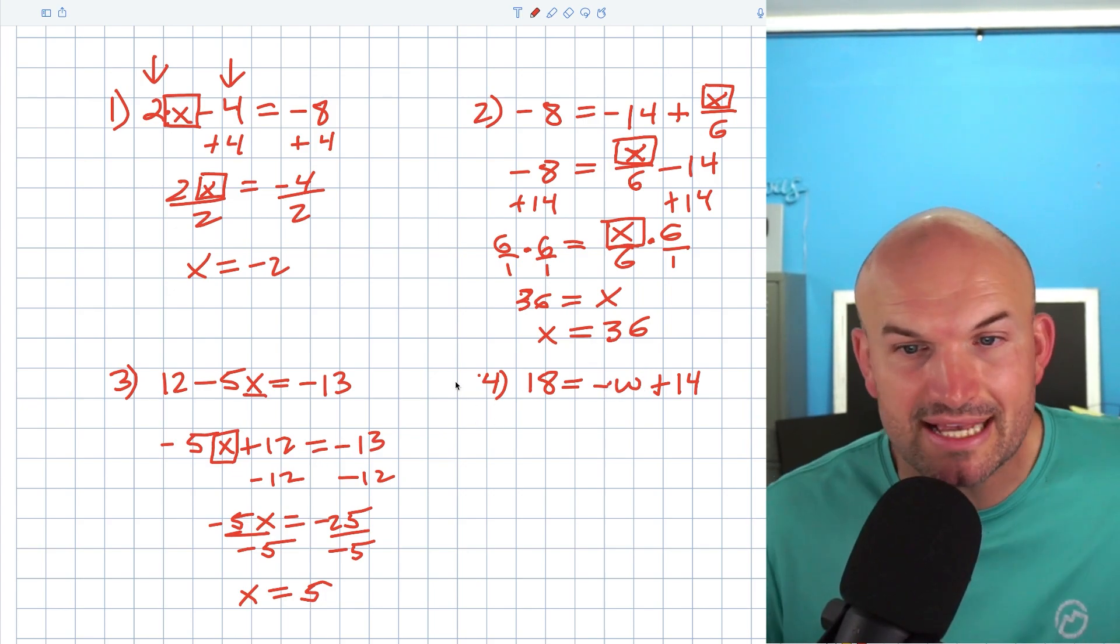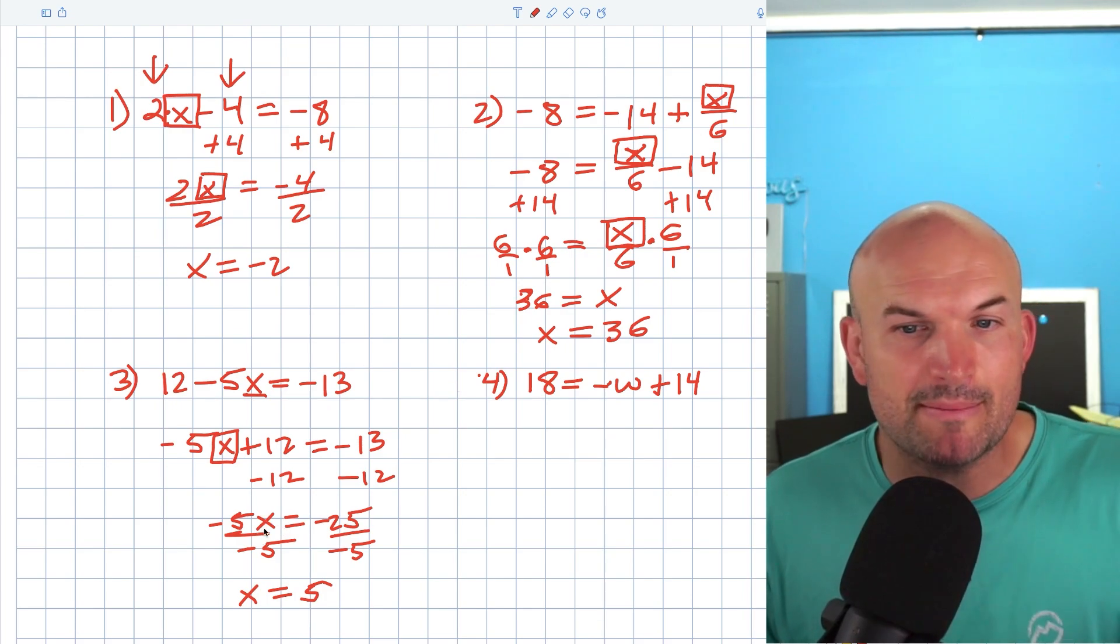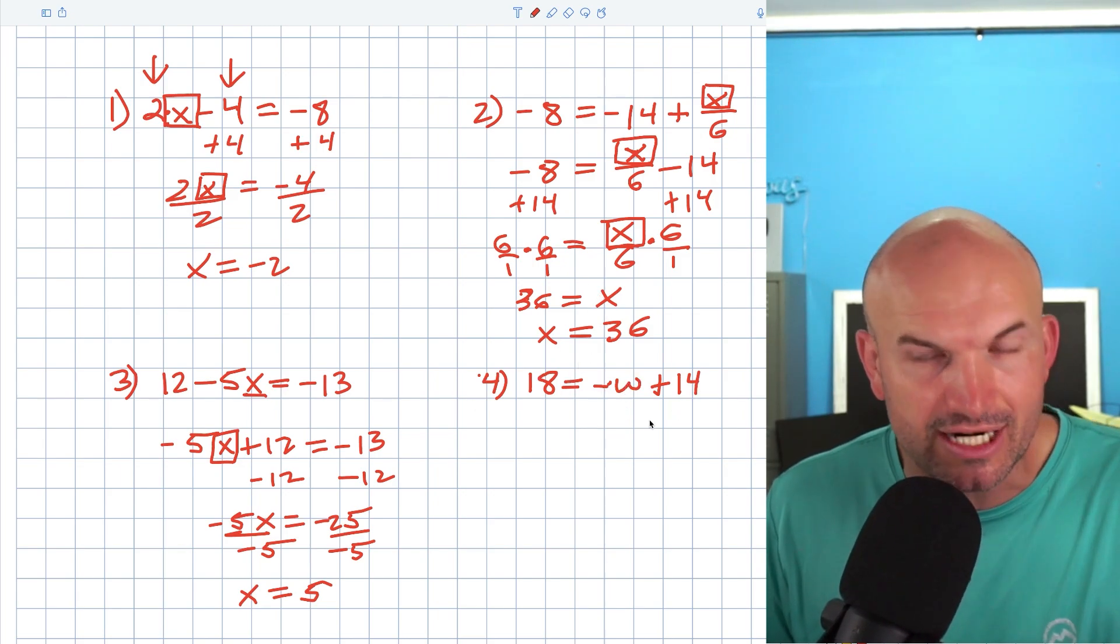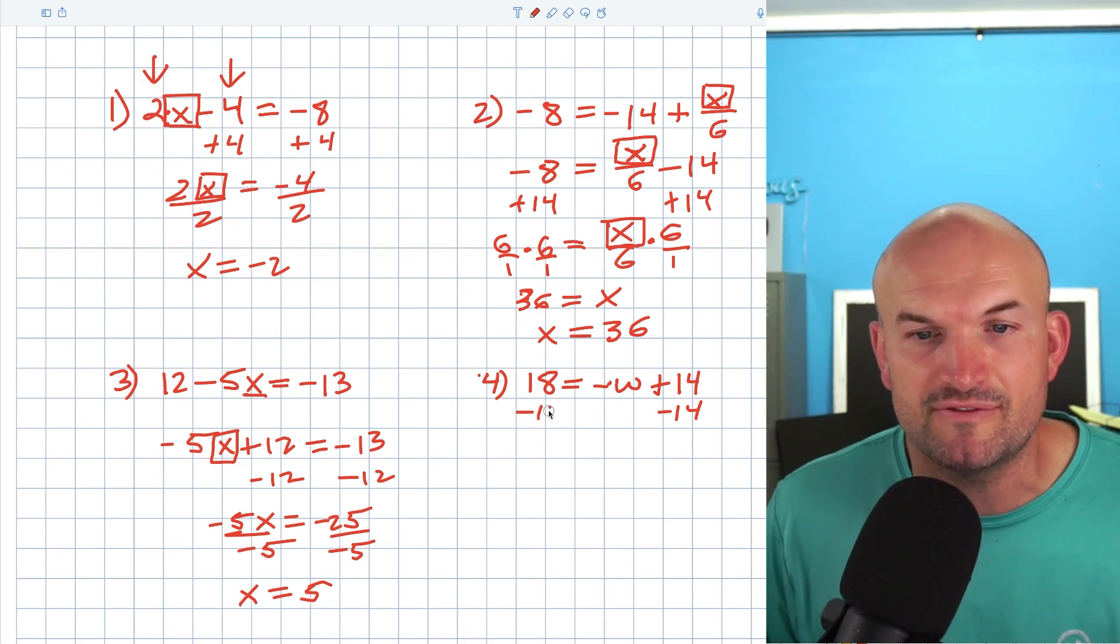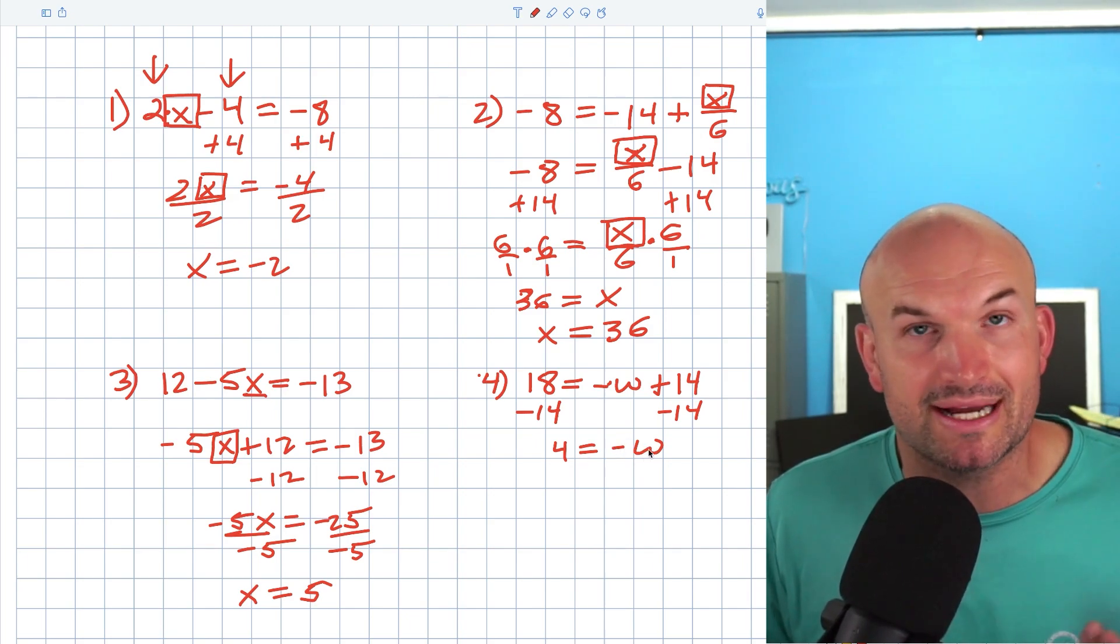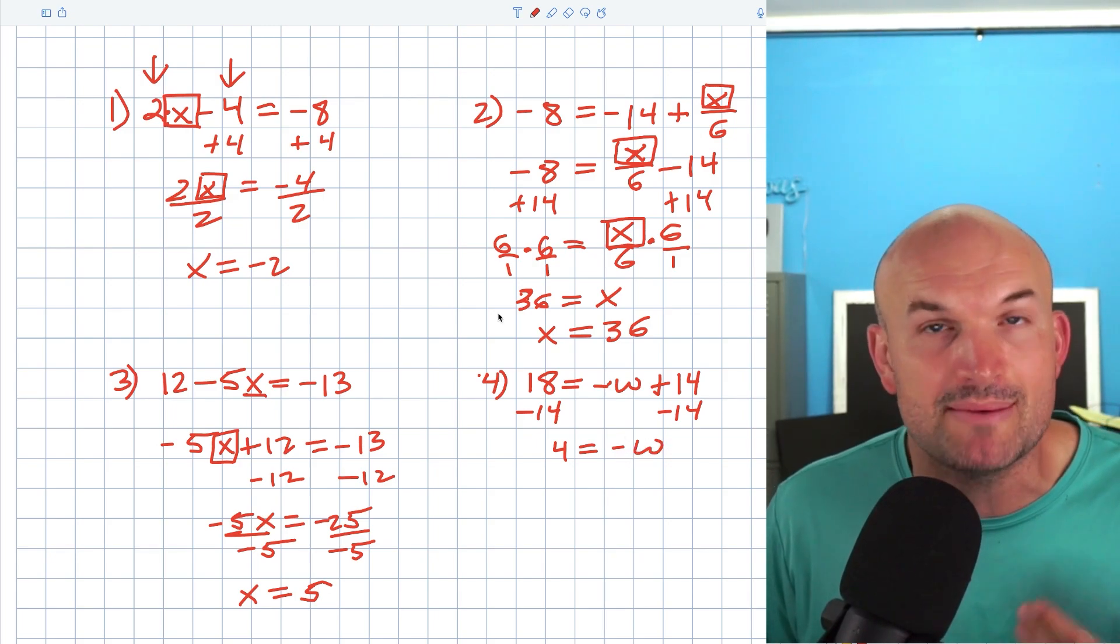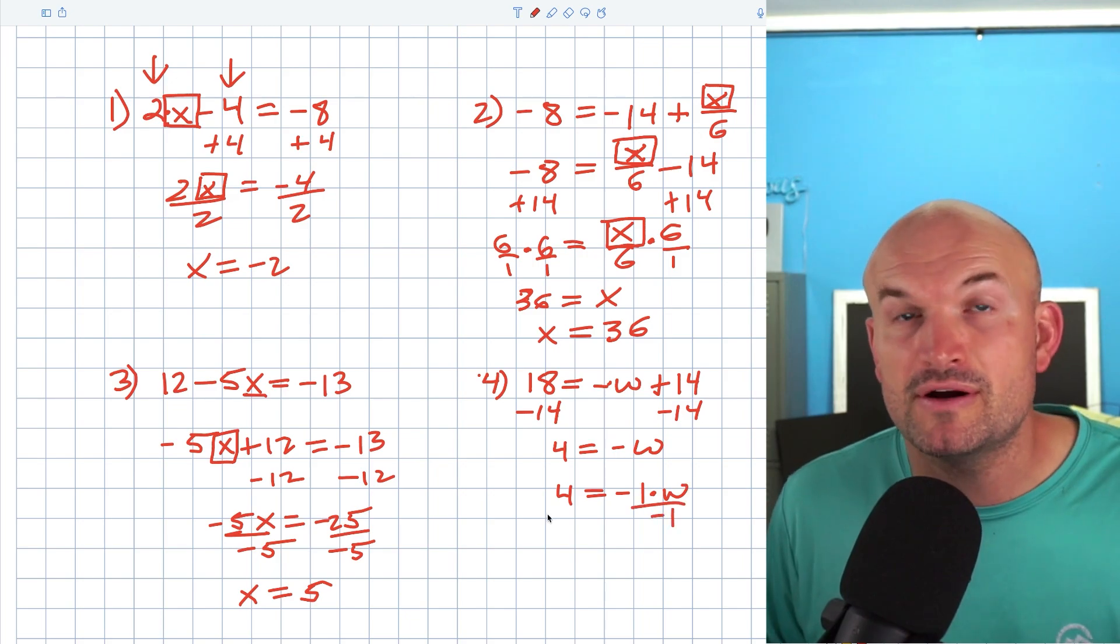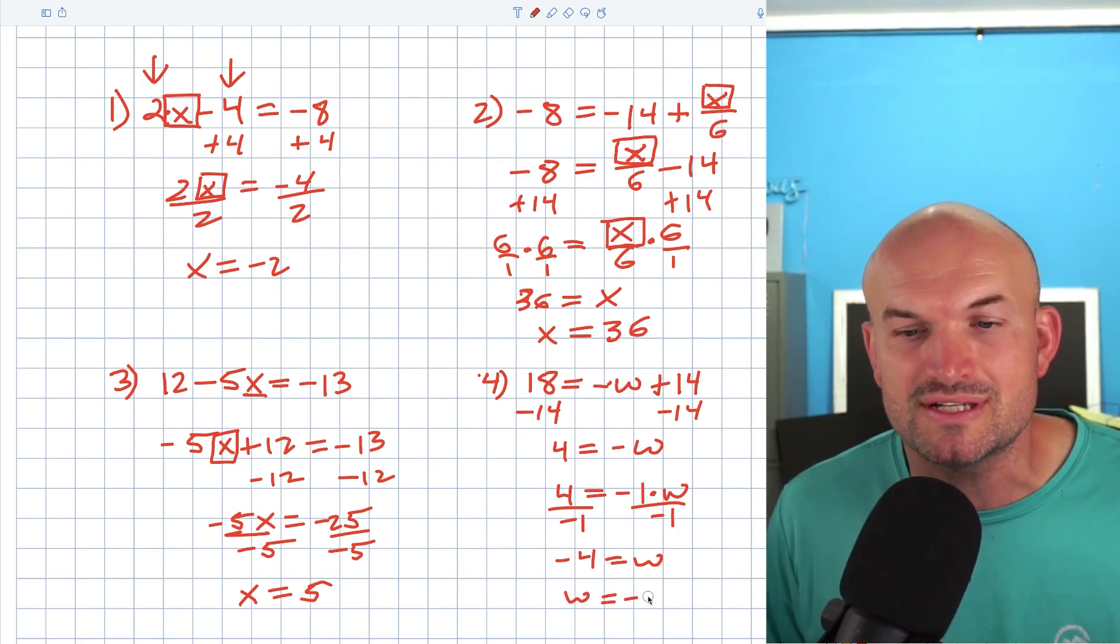The mistake that usually students make here is when they're solving for a negative variable. I try to avoid solving for a negative variable because we just have to remember when we're solving for a variable, we want to solve for the positive version of that. A couple of things we need to make sure - when we're finding our inverse operations, we can see I'm adding 14 and multiplying by negative 1. So I will subtract 14 on both sides. That's going to be 4 = -W. If I want to undo the operation that's being applied to W, I got to understand what is happening. When I just have a negative W, you're not subtracting the W. What's actually happening is you're multiplying by negative 1. So I can rewrite this expression as 4 = -1 times W. Therefore, I'm just going to divide by negative 1 on both sides, and that's going to give me -4 = W, which I can rewrite as W = -4.